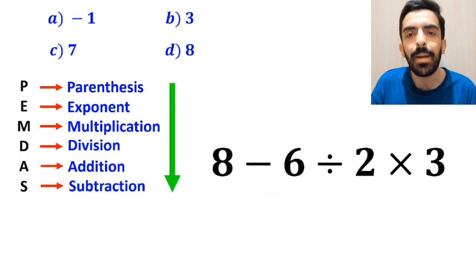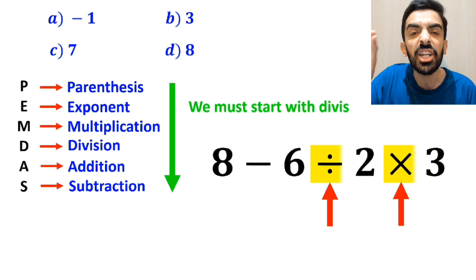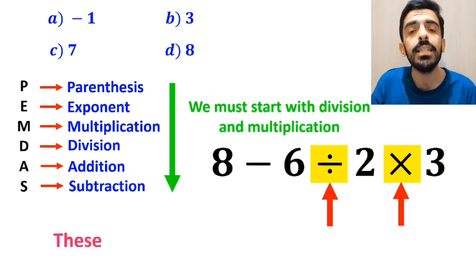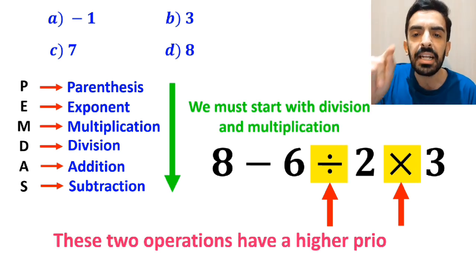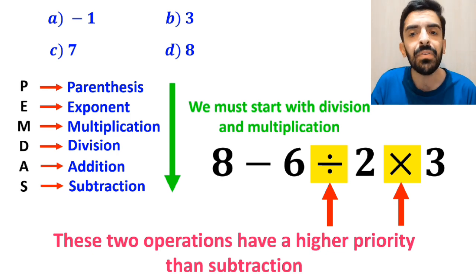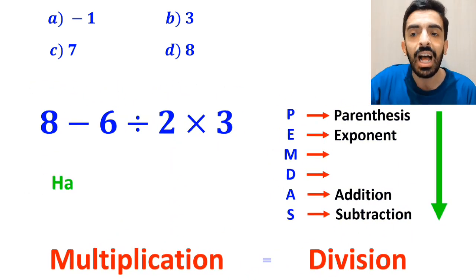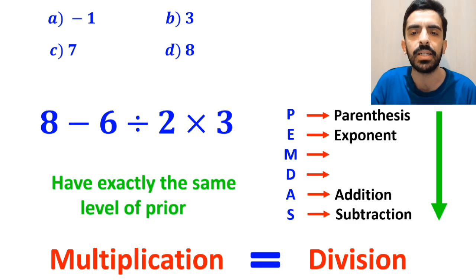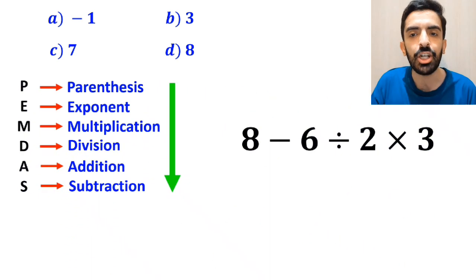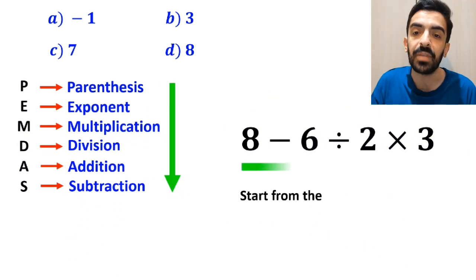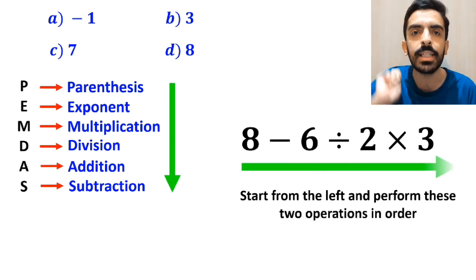According to the PEMDAS rule, we must start with the division and multiplication because these two operations have a higher priority than subtraction. However, it's very important to keep in mind that multiplication and division have exactly the same level of priority. In this situation, the best approach is to start from the left and perform these two operations in order.